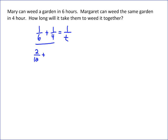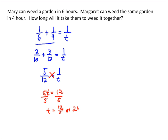It's going to give me 2 twelfths plus 3 twelfths equals 1 over t, which would give me 5 over 12 equals 1 over t. Now we can just cross multiply, so that will give me 5t equals 12, and when you divide both sides by 5, t equals 12 fifths.